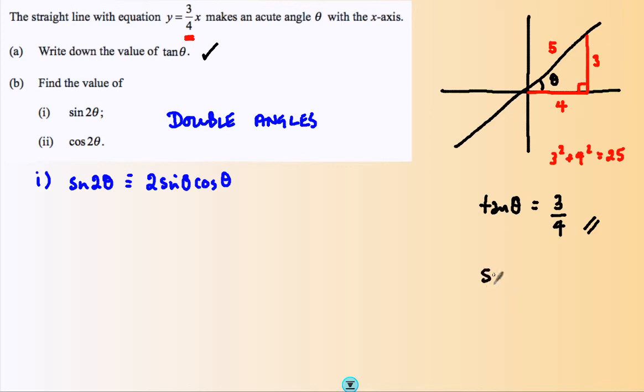And as soon as we do, we know that sine theta, opposite divided by hypotenuse, and cosine of theta, adjacent divided by hypotenuse.